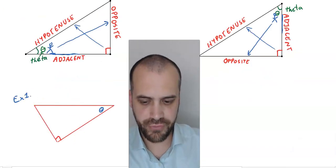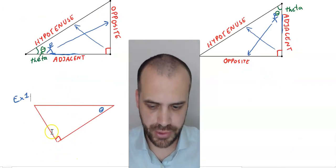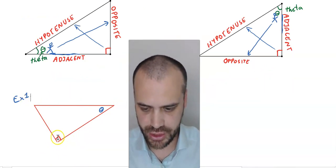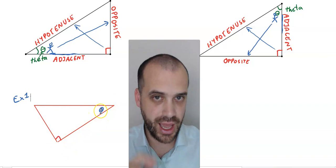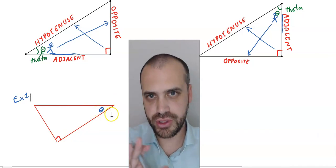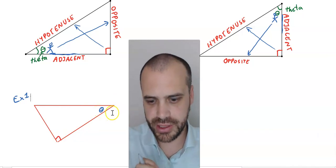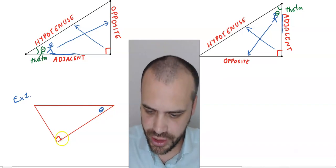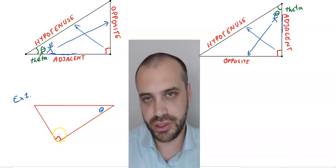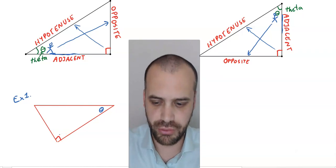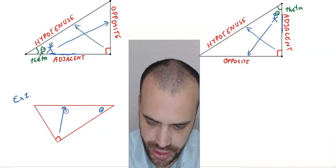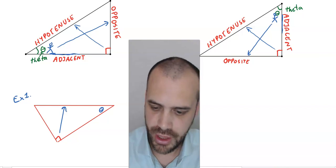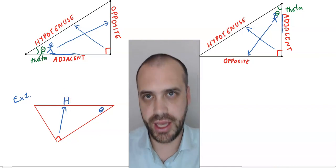Here's our first example — let's label this triangle. We can see the right angle and the angle of interest. The first side I always label is the hypotenuse, because it's easiest to find. Here's the right angle; the hypotenuse is the longest side, the one opposite the right angle — it's this one right here. I'm going to use the letter H for it rather than writing hypotenuse every time.